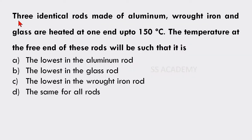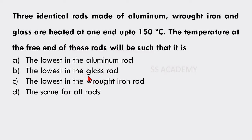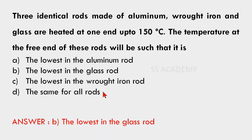Next question: Three identical rods made of aluminum, wrought iron, and glass are heated at one end to 150°C. The temperature at the free end will be lowest in the aluminum rod, lowest in the glass rod, lowest in the wrought iron rod, or the same for all rods? The answer is: lowest in the glass rod.